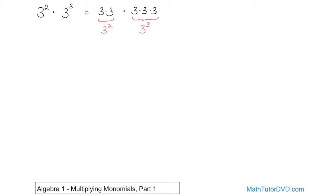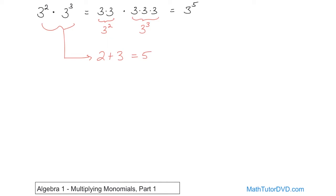Now, how do we simplify these? When you write it out, it's really 3 times 3 times 3 times 3 times 3, which is the same thing as 3 raised to the power of 5, because now you're multiplying 3 by itself 5 times altogether. So it's 3 raised to the power of 5. If you look at these two exponents, 2 plus 3 is equal to 5. So basically, that's how you're going to handle it.